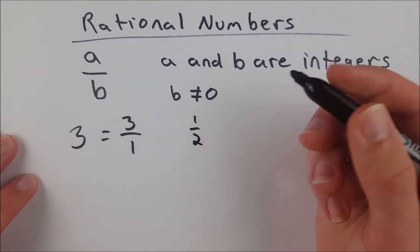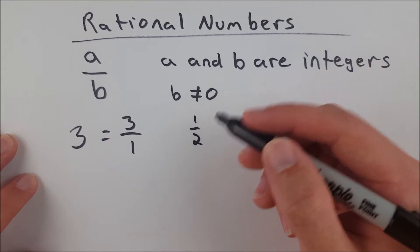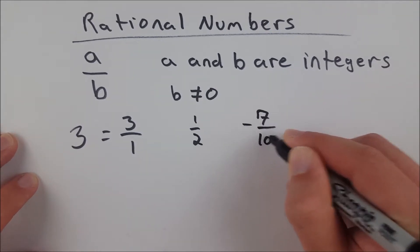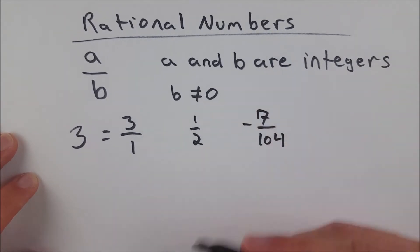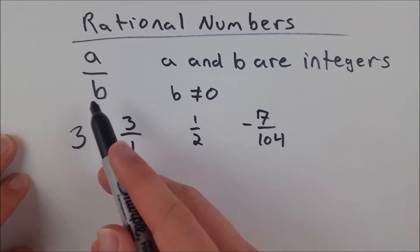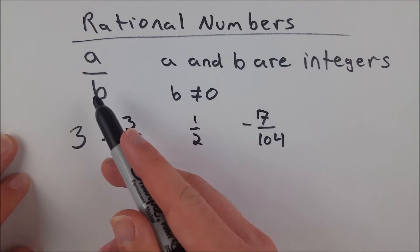Other examples would be 1 half, which is a rational number. 1 and 2 integers. 2 is not equal to 0. Negative 7 over 104 is a rational number. They all have some form, some integer divided by some integer, where the bottom integer, meaning the denominator, is not equal to 0.